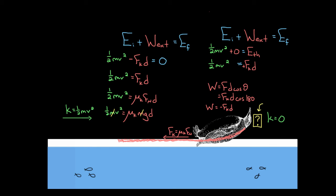This also means that two cars — a really tiny smart car and a huge SUV — if they've got the same tires, they'll have the same coefficient of friction. If they start with the same speed and slam on their brakes, they'll both skid to a stop in the same distance. That massive SUV has more inertia but also more friction, so it stops in the same distance as the smaller smart car that has less inertia and less frictional force.